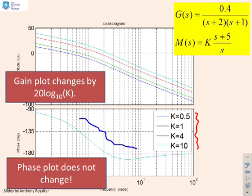What about the gain plot? Well, the gain plots have moved up and down by 20 log to the base 10 of K. So if you look, you'll see I've got K equals 0.5. 20 log to the base 10 of 0.5 is going to be something like minus 6 decibels. And so if you look up here, what you'll see is to get from the green plot to the blue plot, you've gone down by 6 decibels.